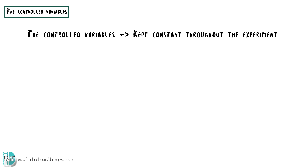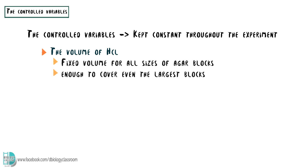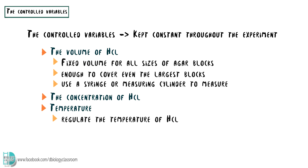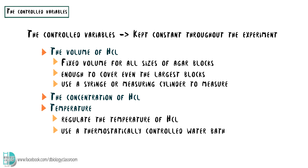There are a few factors that we need to keep constant so they do not affect the results of the experiment. Some examples include the volume of hydrochloric acid — you should choose a fixed volume which is enough to cover the blocks in the beaker, then use a syringe or measuring cylinder to measure its volume. Secondly, the concentration of the acid. The third one is the temperature. You can control this by regulating the temperature of the acid.